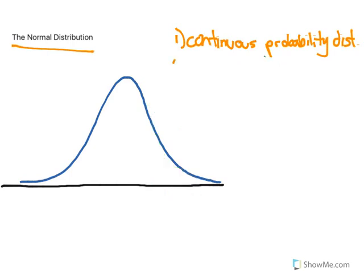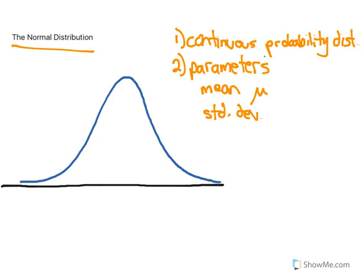The second thing we want to take away from this video is that every normal distribution has two parameters. These two parameters are going to dictate how tall or how short and how skinny or how wide this particular curve is going to be. The two parameters are the mean of the distribution — we use mu to signify that — and the standard deviation of our distribution, and we use the Greek letter sigma to signify the standard deviation.